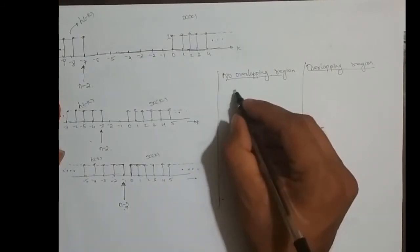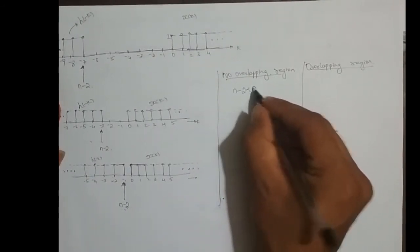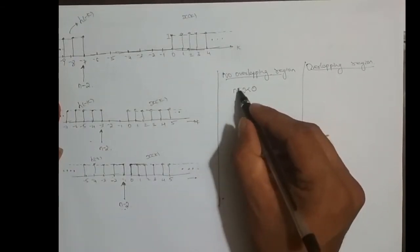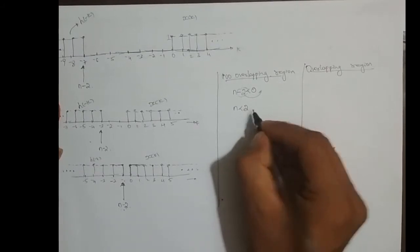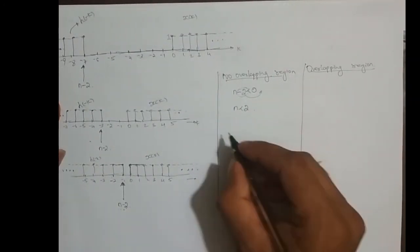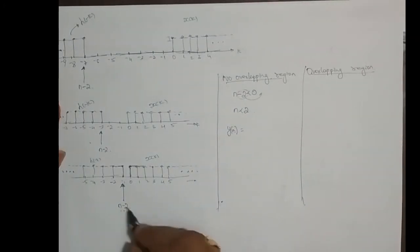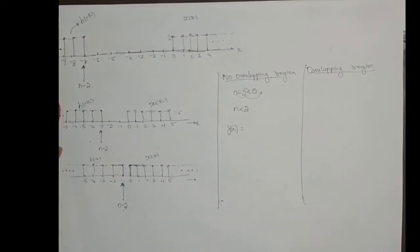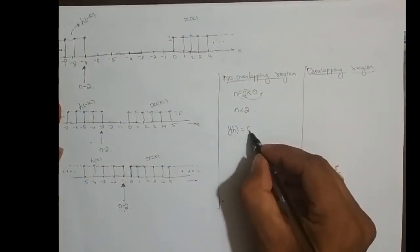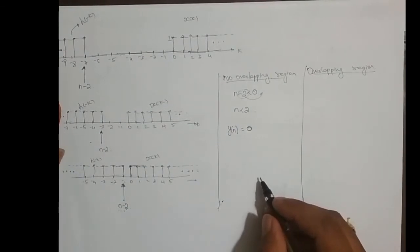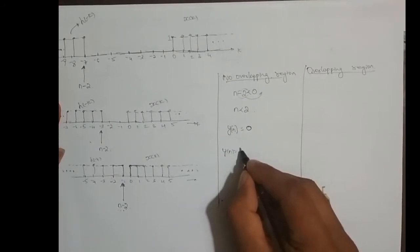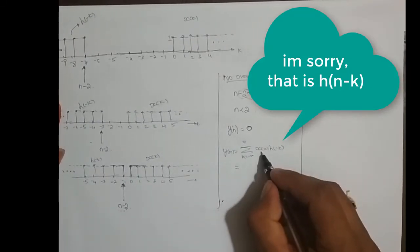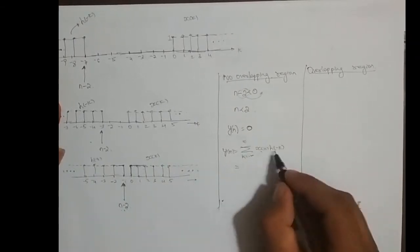Since the non-overlapping region is n minus 2 less than 0, bringing minus 2 to the other side gives n less than 2. So what is the output y[n]? Since x[k] and h[-k] do not overlap, y[n] equals 0. This is because y[n] is the summation from k equals minus infinity to infinity of x[k] times h[-k], and with no overlap that product is always zero.